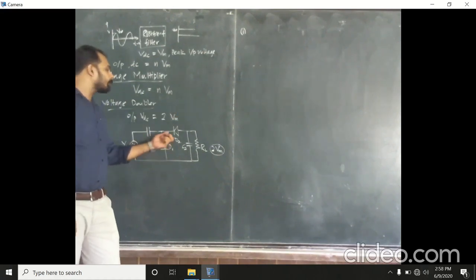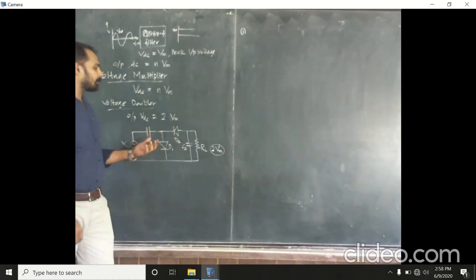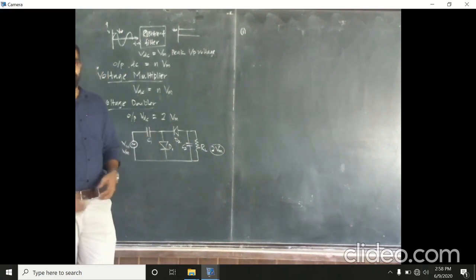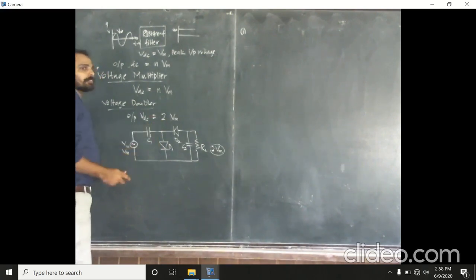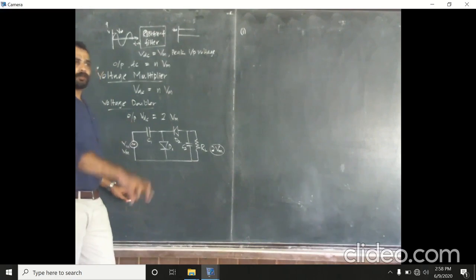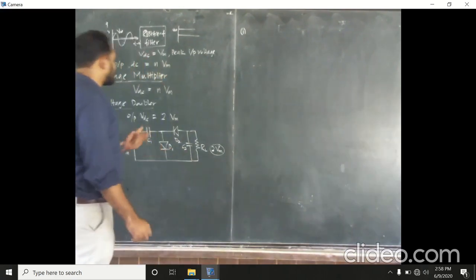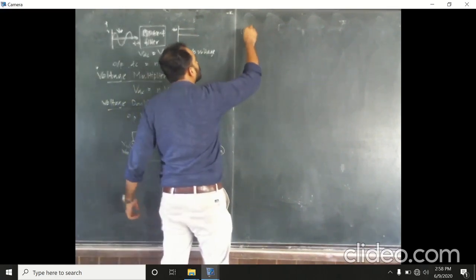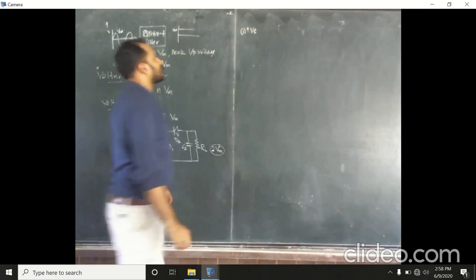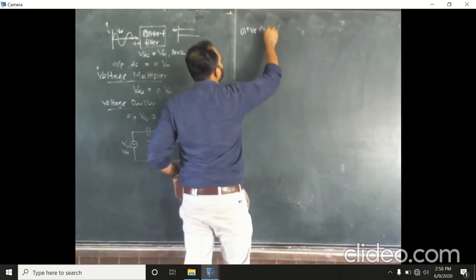A diode will be forward biased during a positive cycle and a diode will be reverse biased during a negative cycle. If you apply a positive cycle, it will be the exact opposite of the negative half cycle. So, let's consider the equivalent circuit of this voltage doubler. For that, let's consider the circuit during the positive half cycle.